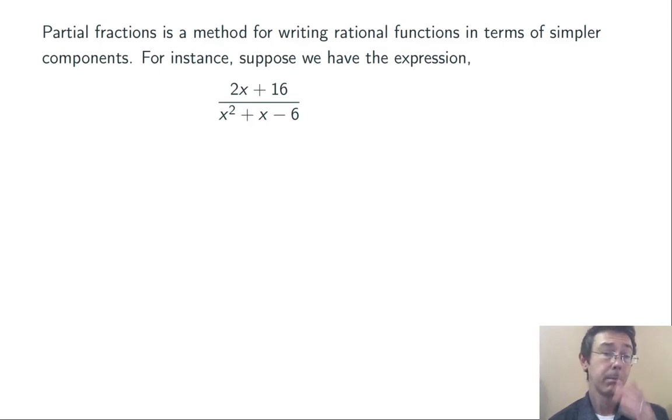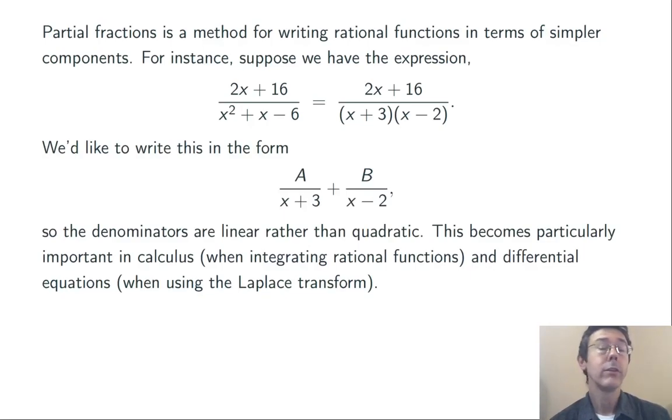Here's an example of what I mean. 2x plus 16 over x squared plus x minus 6, or to write it slightly differently, 2x plus 16 over (x + 3)(x - 2). The denominator here is quadratic, but we'd like to write it as a sum of rational functions whose denominators are linear, first degree rather than second.